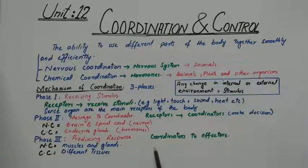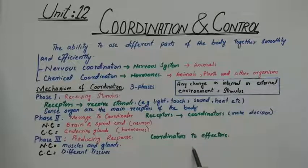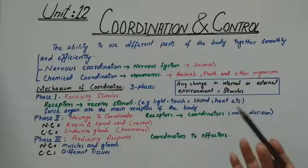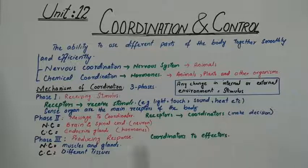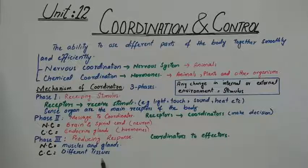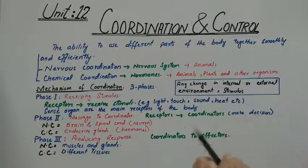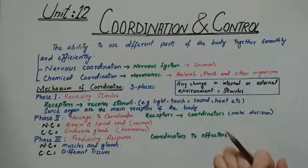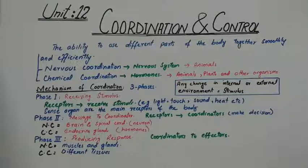After the coordinator takes a decision, it sends the message to special parts of the body for the proper function. Those parts are known as effectors — the parts that will react and produce the response. In nervous coordination, muscles and glands are the effectors. In chemical coordination, different tissues of the body act as effectors. Upon receiving the coordinator's message, effectors carry out actions according to their specialization and show their response.